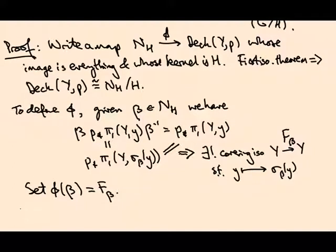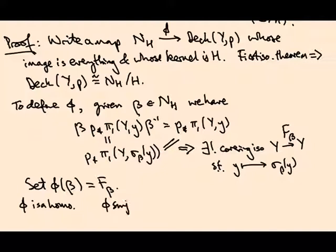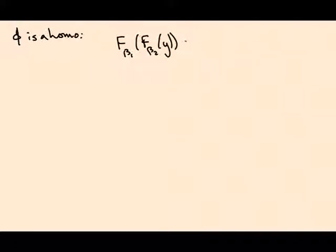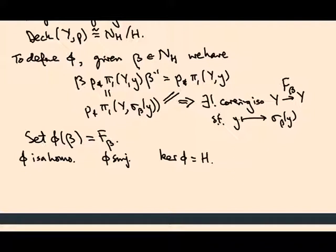We need to check that φ is a homomorphism, that φ is surjective, and that the kernel of φ is H. Let's check that φ is a homomorphism. We need to verify that Fᵦ₁(Fᵦ₂(y)) equals Fᵦ₁(σᵦ₂(y)) by definition, since Fᵦ is the map that sends y to σᵦ(y).